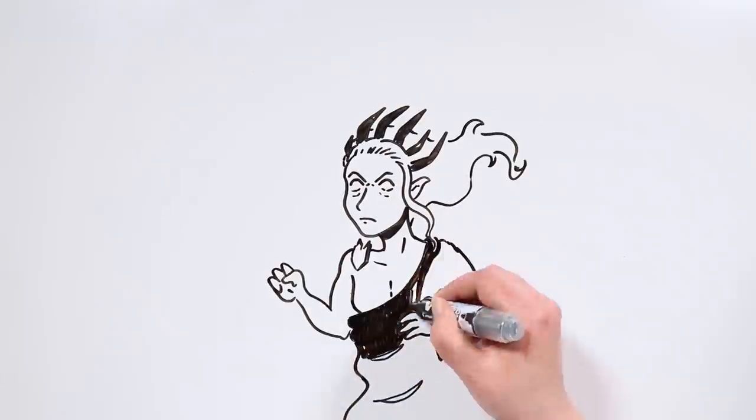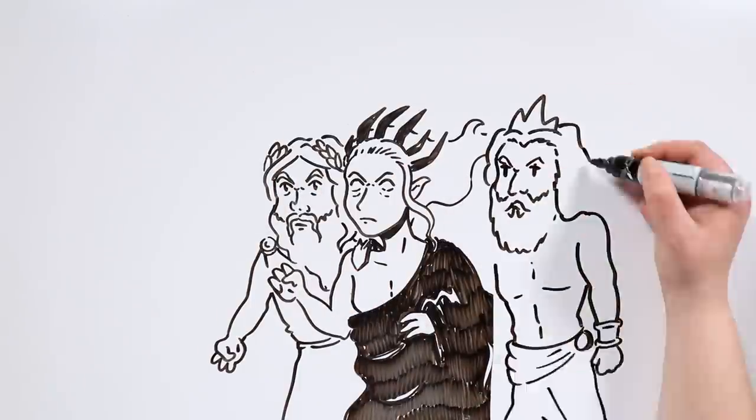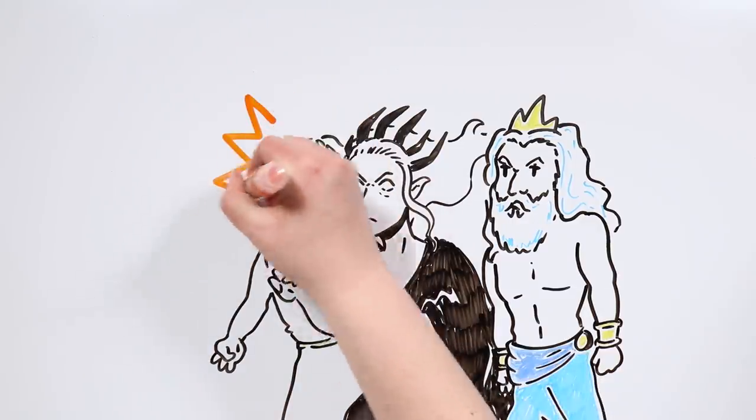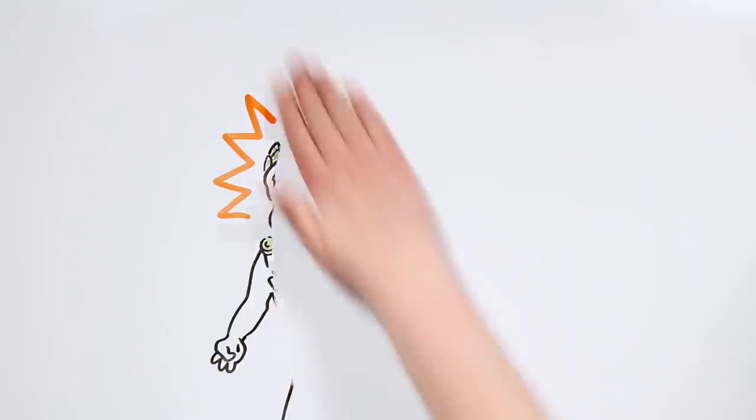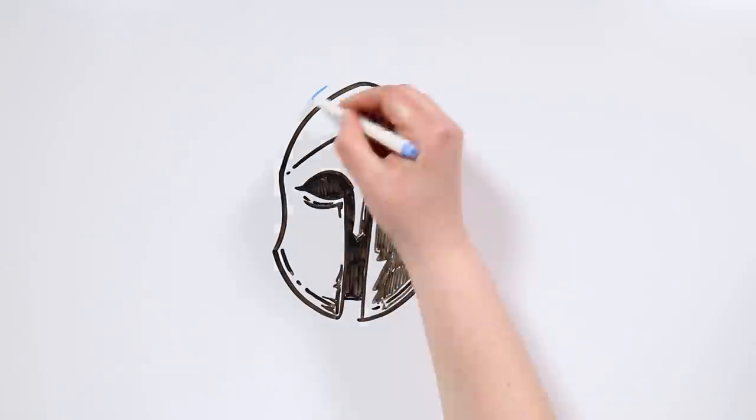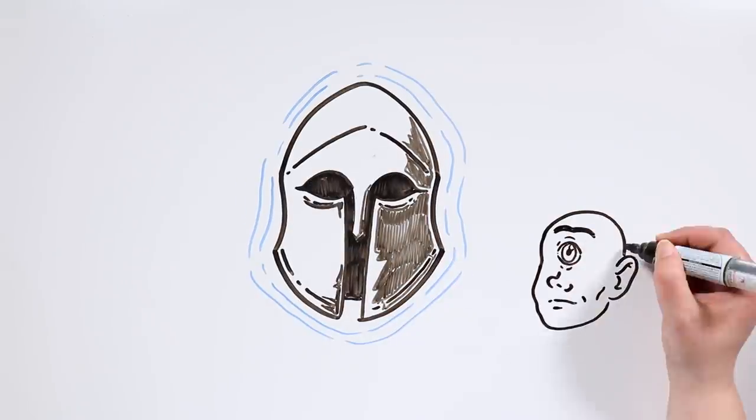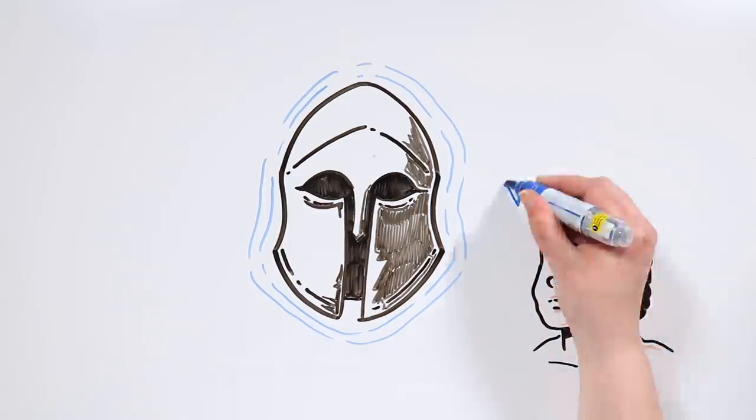Hades and his brothers Zeus and Poseidon fought against their father and the other titans, and were victorious in a war known as the Titanomachy. Hades had a unique weapon, an invisibility helmet forged by the Cyclops, which made it easier for him to defeat his enemies.